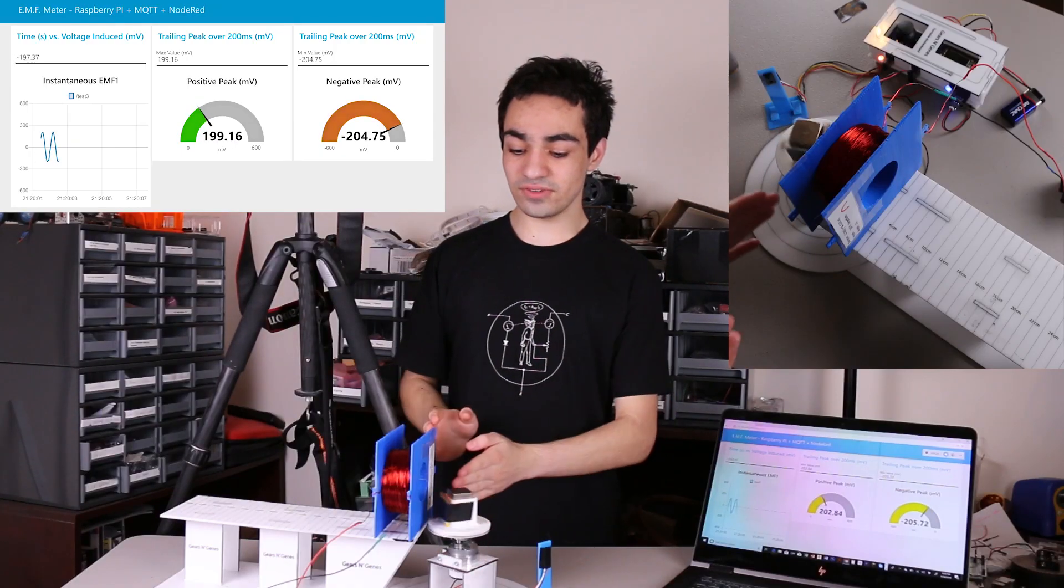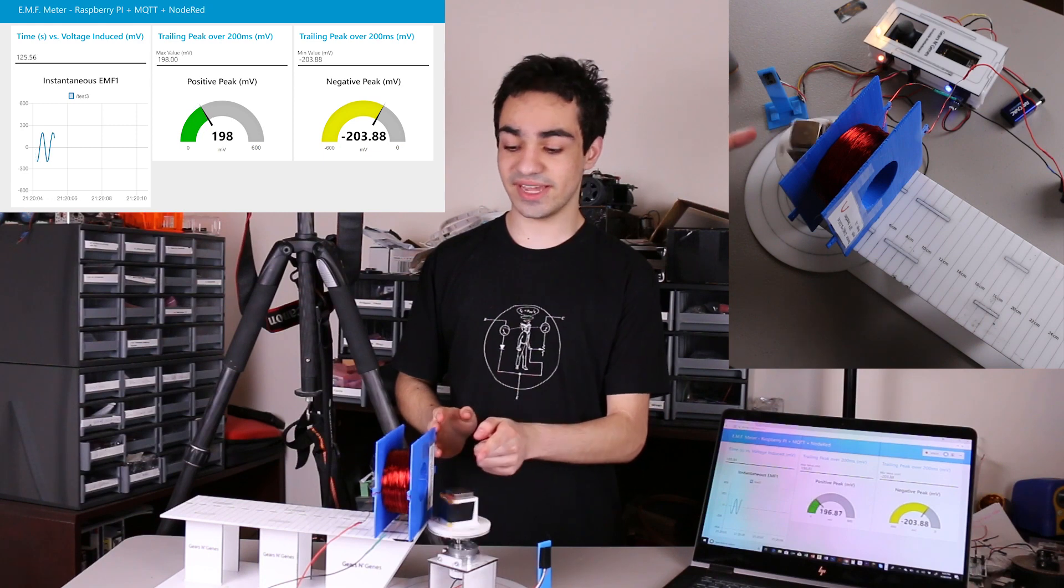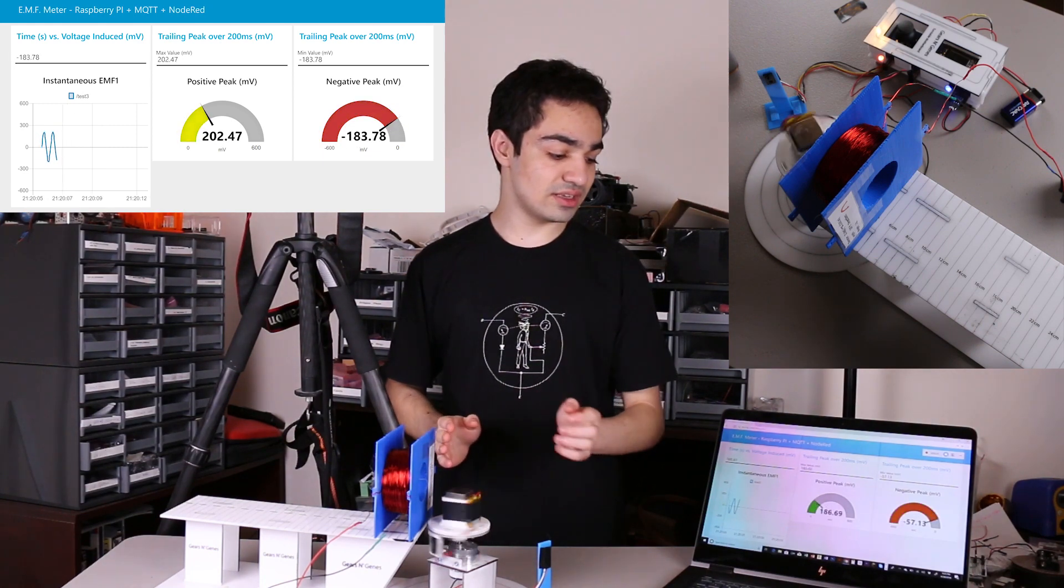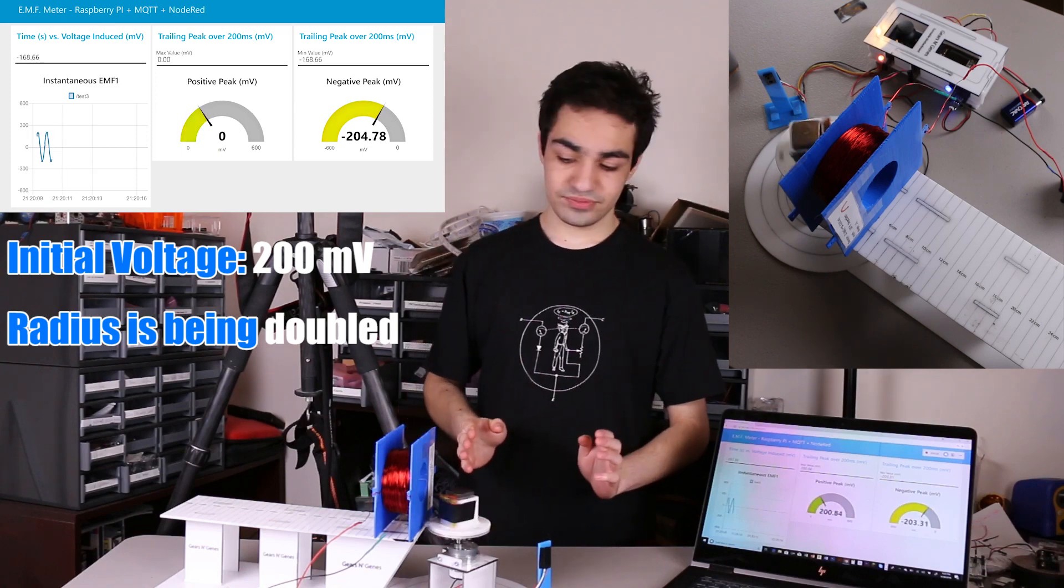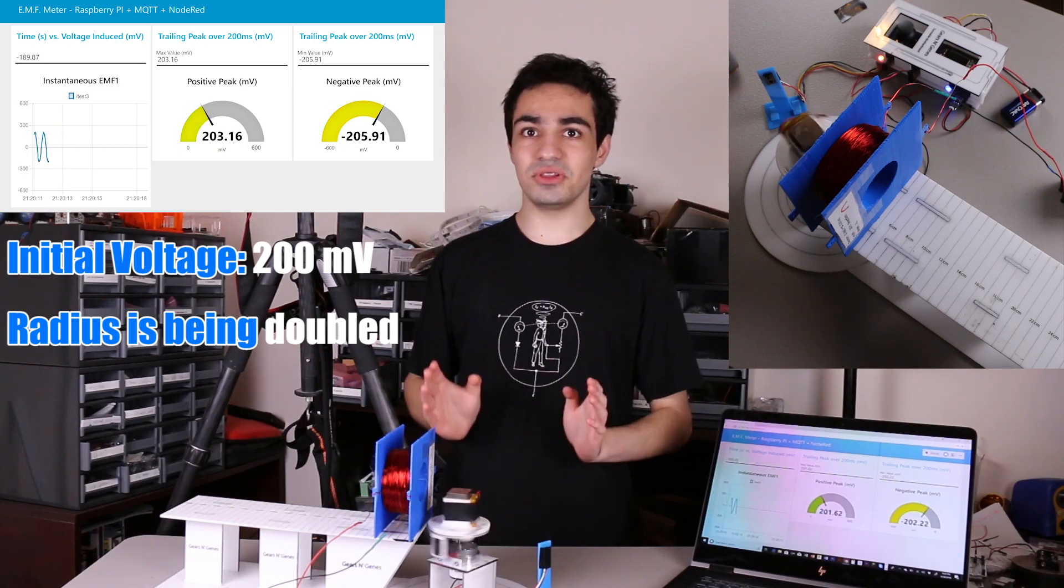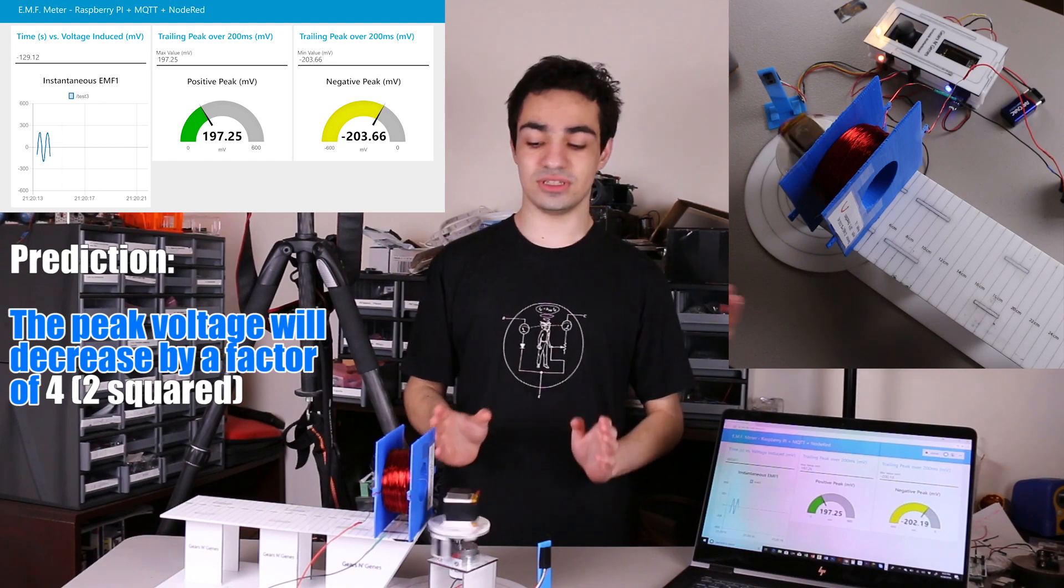Currently the front of the coil is 5 centimeters away from the center of this magnet, and when we look at the peak voltages we're getting approximately 200 millivolts. Now what we're going to do is double the distance and see what effect that has on the voltage.